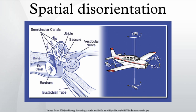Intentionally induced spatial disorientation was also a major plot point in the two-part Tailspin episode 'A Bad Reflection on You.'